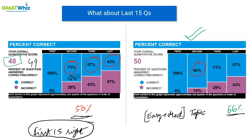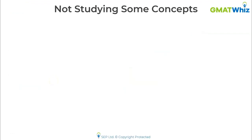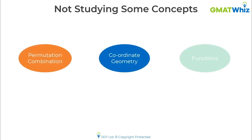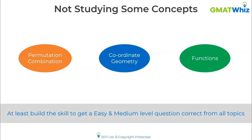One mistake many people make is not studying certain concepts at all. For example, many people dread topics like permutation combination, coordinate geometry, and functions. This is a big mistake. Since easy and medium questions are critical, you must build the skill to answer easy and medium level questions correctly from any topic. Identify in which topics your easy and medium questions are going wrong — those are your concept gaps.